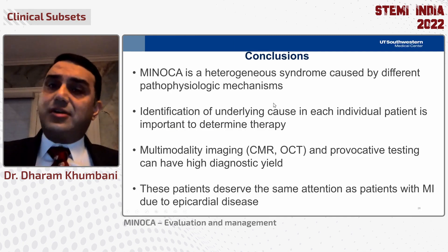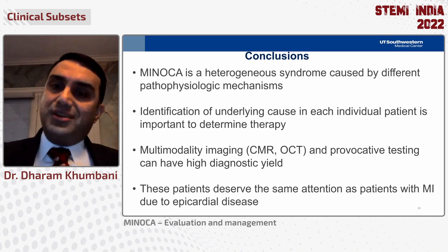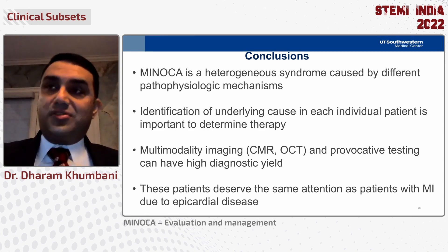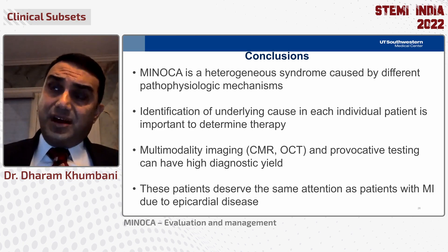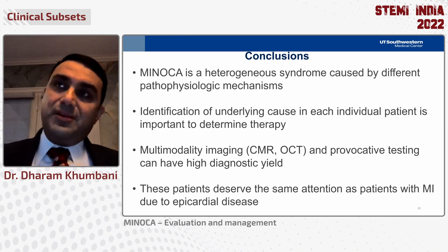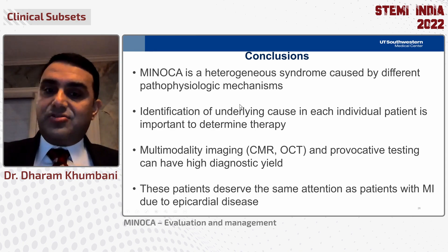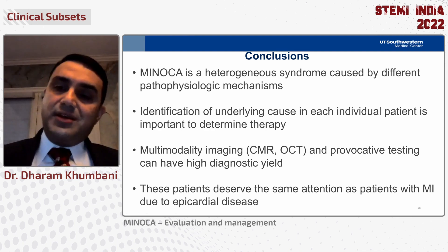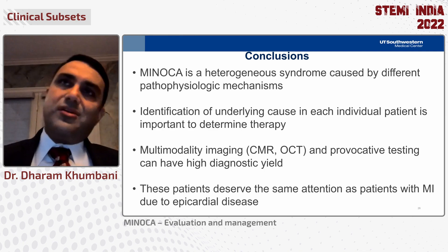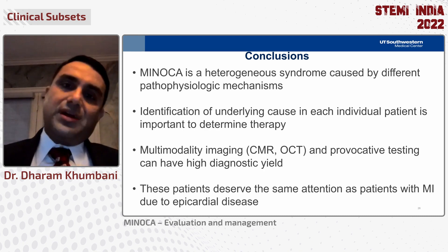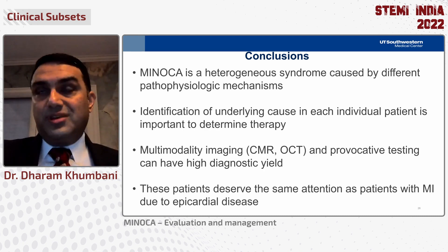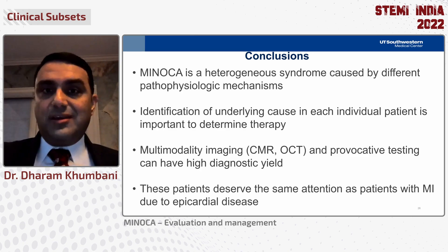In conclusion, MINOCA is a heterogeneous syndrome caused by many different pathophysiologic mechanisms, and identifying the cause in each individual patient is very important to determine therapy. Multimodality imaging with cardiac MRI and OCT, along with provocative testing, can have a high diagnostic yield depending on pre-test probability. These patients deserve the same attention as patients with MI due to epicardial disease. In 2022, it's probably not enough to just look at the angiogram and say it looks normal — if a patient had an MI, we need to find out what happened. Thank you.